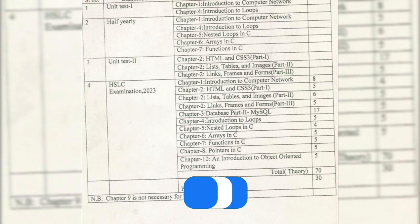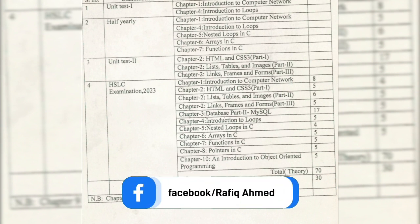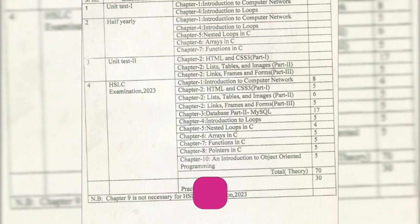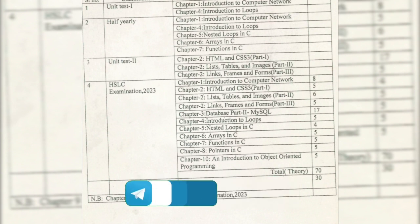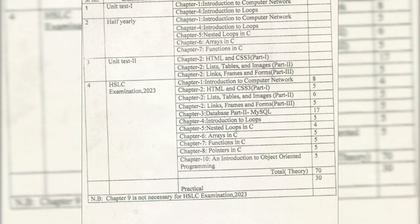From C programming, Chapter 4 Introduction to Loop has 4 to 5 marks, nested loops has 4 marks, arrays has 5 marks, functions has 5 marks, and pointers has 5 marks — so from each C programming chapter roughly 5 marks each. Chapter 10, which is also theory-based on Introduction to OOP or Object Oriented Programming, also has 5 marks.